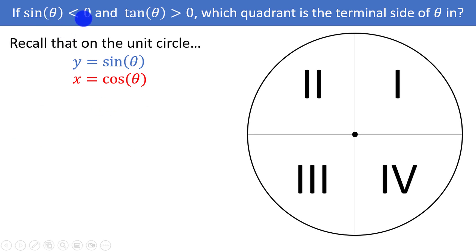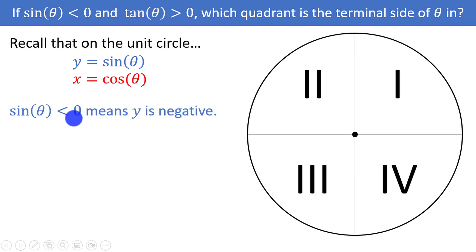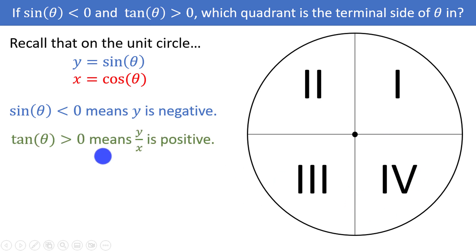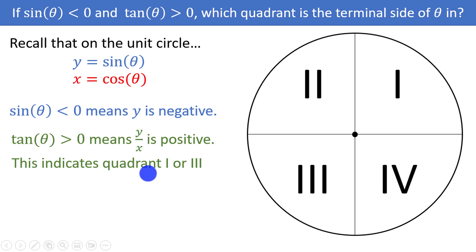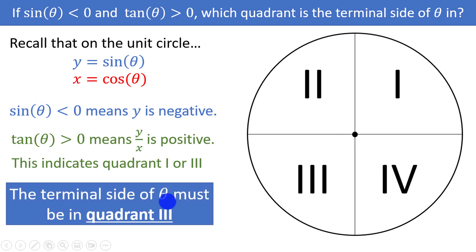Let's try another one. Say sine of theta is less than zero and tangent of theta is greater than zero — which quadrant is the terminal side in? Sine less than zero means y is negative, so we are in quadrant 3 or 4. Tangent greater than zero means the ratio of y to x is positive, meaning sine over cosine is positive. That happens when both x and y are positive (quadrant 1) or both are negative (quadrant 3). Tangent positive indicates quadrant 1 or 3. Combined with the earlier information placing us in quadrant 3 or 4, the common quadrant is quadrant 3. The terminal side of theta must be in quadrant 3.